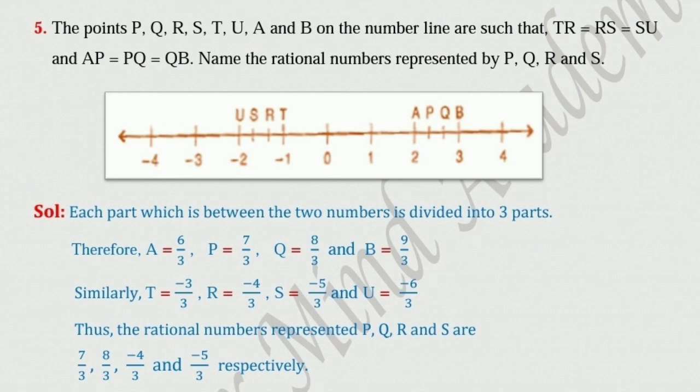Similarly, T is equal to minus 3 upon 3, R is equal to minus 4 upon 3, S is equal to minus 5 upon 3, and U is equal to minus 6 upon 3. Thus, the rational numbers represented by P, Q, R and S are 7 upon 3, 8 upon 3, minus 4 upon 3, and minus 5 upon 3 respectively.